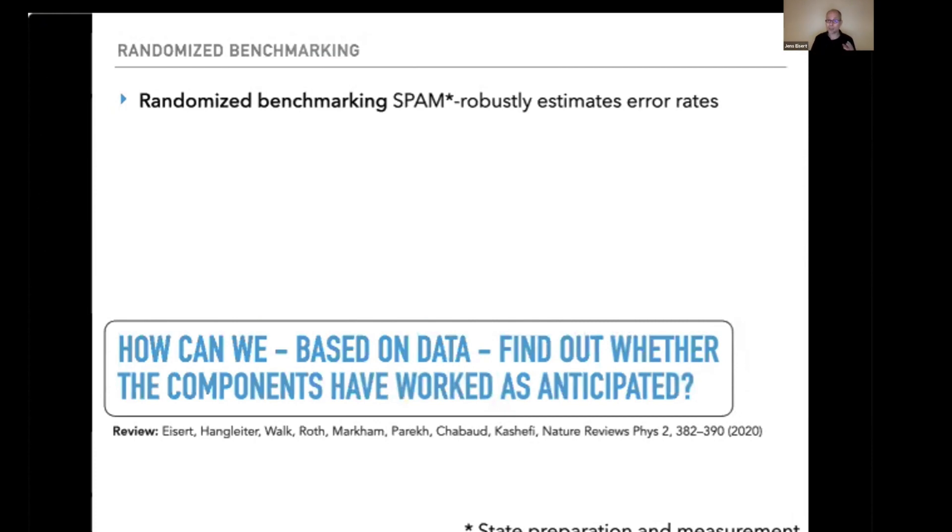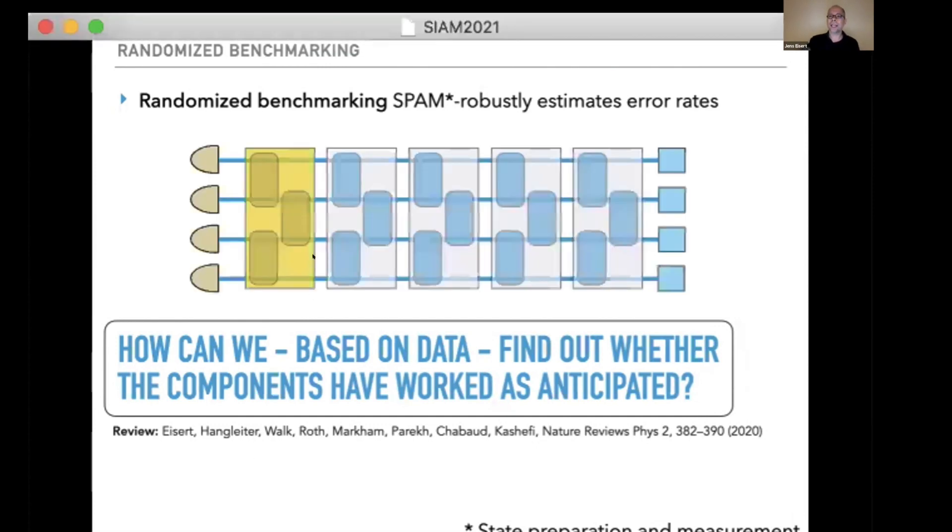It's state preparation and measurement (SPAM) robust in that one cleverly prepares a state, applies a random sequence of gates or circuits and the entire gate operation in the last step, then estimates the decay rate in the length of the sequence to estimate quantities such as average gate fidelity. SPAM robust means the preparation and measurement can be slightly messed up and one still reliably estimates the quality of the quantum gates.